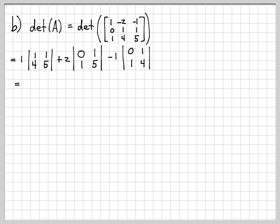As we continue the computation, now doing the determinants of these 2 by 2 matrices is very simple. You just take 1 times 5 minus 1 times 4, plus 2 times (0 times 5 minus 1 times 1), minus 1 times (0 times 4 minus 1 times 1). And then if we multiply this out,